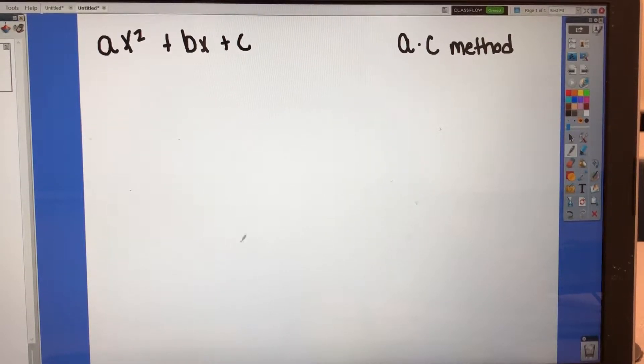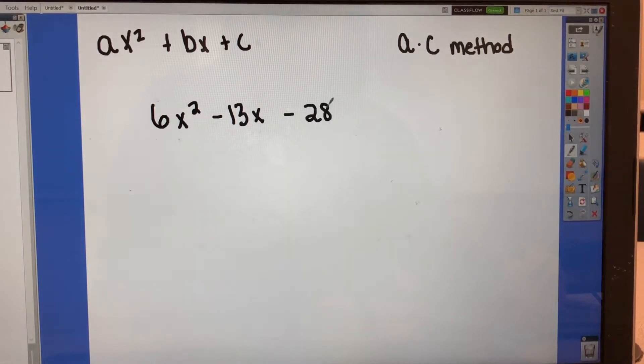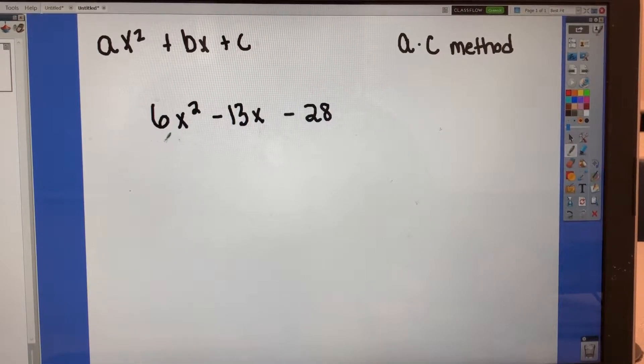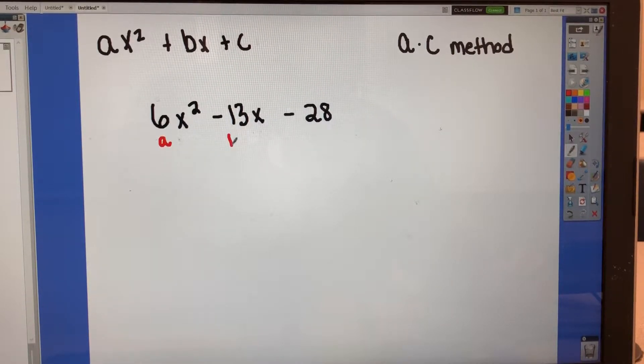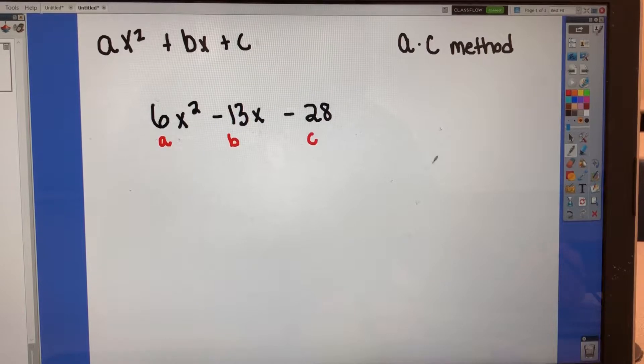So this first method, let's say we have the trinomial 6x squared minus 13x minus 28. So in this method, we want to label our a, b, and c. So a is with our x squared, b is with our x, c is the constant.